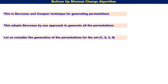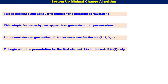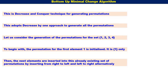Let us consider the generation of permutations for the set {1, 2, 3, 4}. Initially, we find the permutation for the first element 1 — it is just 1. Then the next elements are inserted into this already existing set of permutations by inserting from right to left and left to right alternatively.